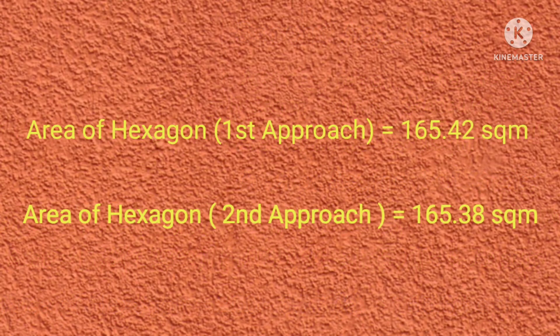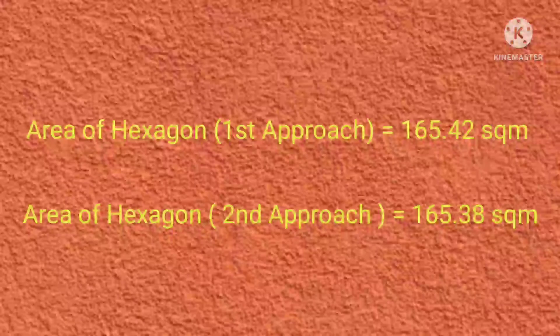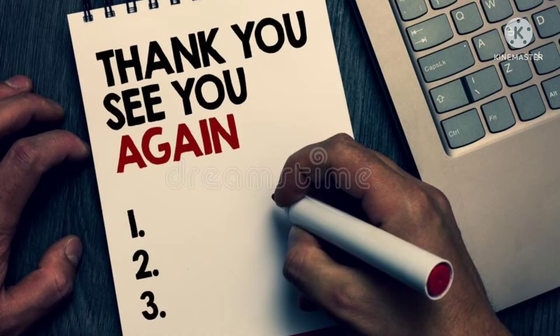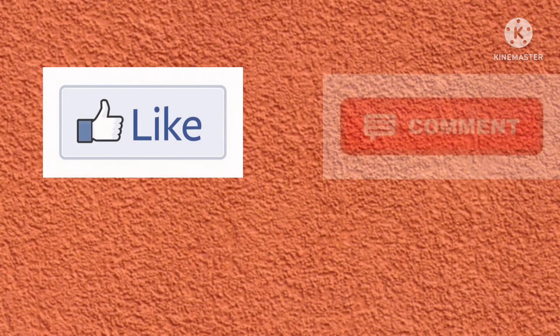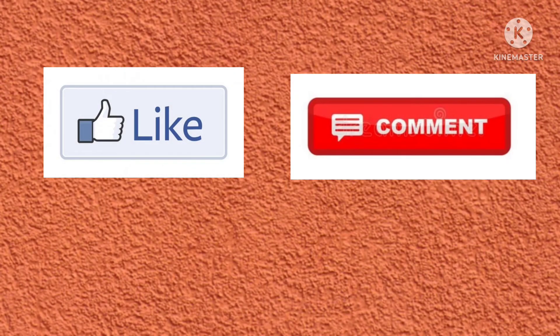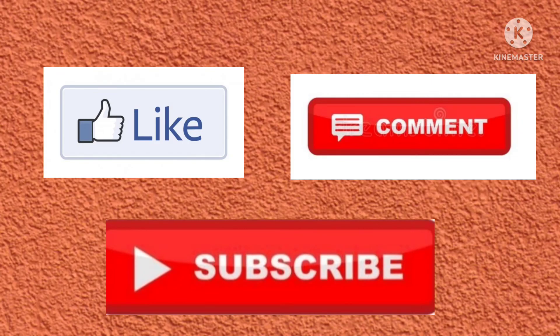Comparing the two answers, we can see they are almost the same — 165.42 and 165.38 square meters — and that is okay. The small discrepancy is caused by rounding off numbers. Thank you for watching. I hope you learned something. Please click the like button and leave some comments below. If you haven't subscribed yet, subscribe now for more videos. Thank you and see you next time.